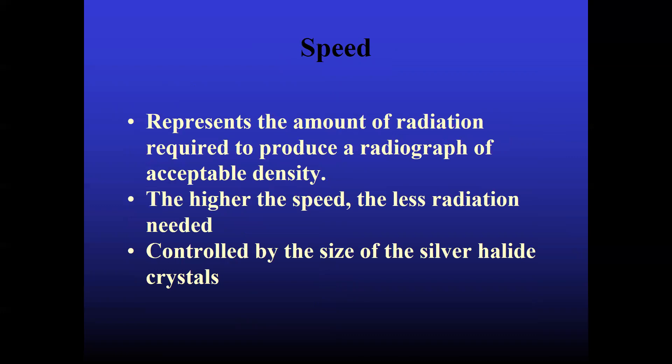Speed. Speed represents the amount of radiation required to produce a radiograph of acceptable density. The higher the speed, the less radiation is needed. Controlled by the size of the silver halide crystals. So you have silver halide crystals in the emulsion which cause the latent image formation. It is controlled by the size of the silver halide surface.